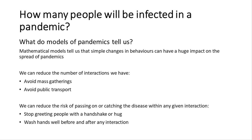Beyond academic interest, mathematical models tell us how simple behavioural changes can impact the spread of pandemics. The chance of spreading infection depends on two things: whether people interact, and whether infection is transmitted within that interaction. We can reduce the number of interactions by avoiding mass gatherings and public transport. We can reduce transmission risk within interactions by stopping handshakes or hugs and washing hands before and after interactions. These small measures, if we all do them, can have a big impact on the spread of pandemics — whereas hoarding toilet paper is probably not going to save anyone.